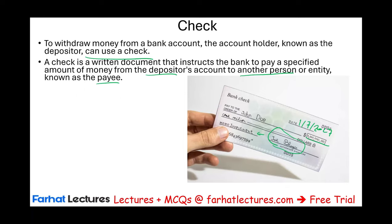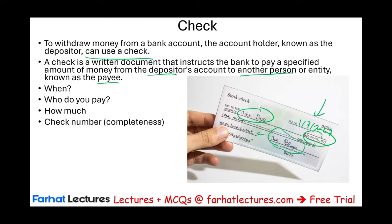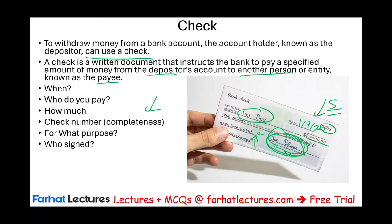A check or EFT tells you several things: when the transaction took place, who you paid, how much, and the check number. The check number is important — it's part of internal control to ensure all checks are accounted for; each check has a pre-printed number. It also shows who signed the check, making them responsible. An EFT captures the same information electronically: who processed the payment is identified by their unique password, along with the amount and timing.